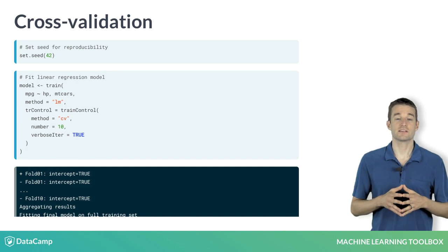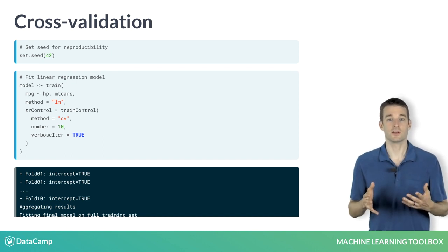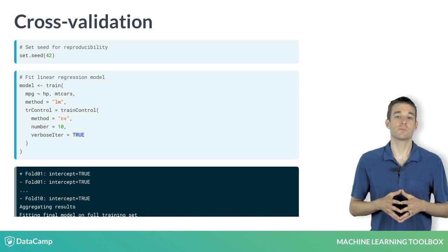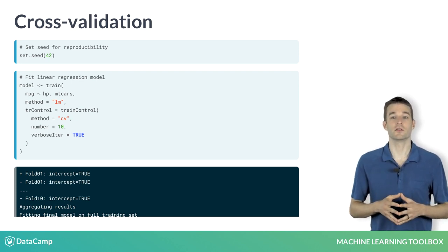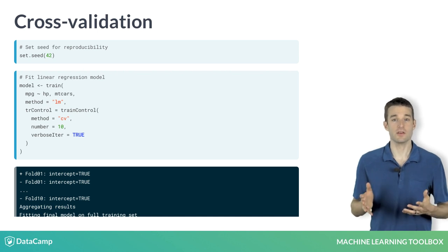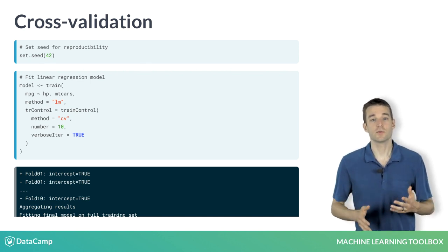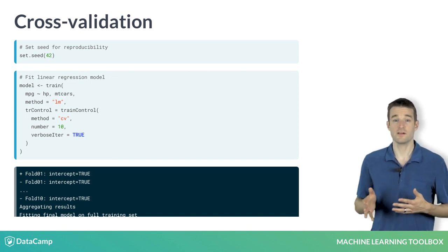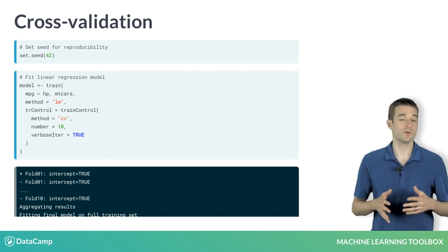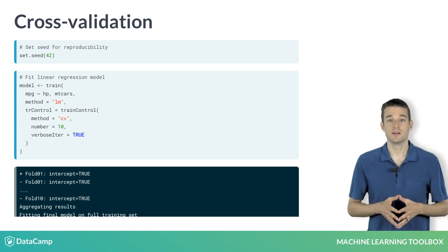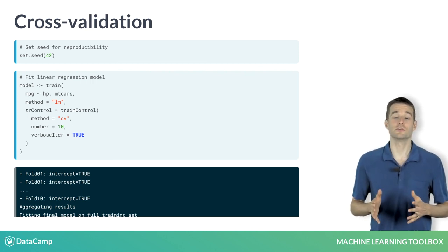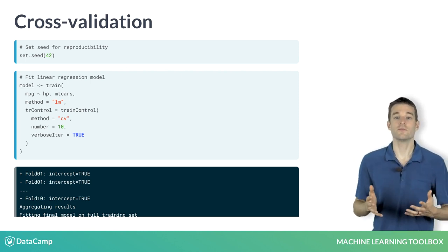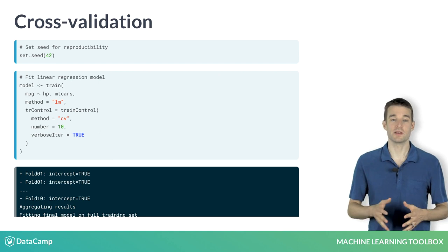The train function has a formula interface, which is identical to the formula interface for the lm function in base R. However, it supports fitting hundreds of different models, which are easily specified with the method argument. In this case, we fit a linear regression model, but we could just as easily specify method equals rf and fit a random forest model, without changing any of our code. This is the second most useful feature of the caret package behind the cross-validation of models. It provides a common interface to hundreds of different predictive models.